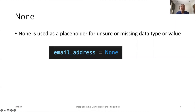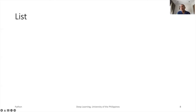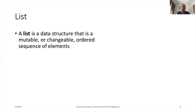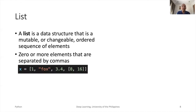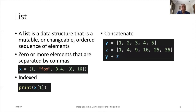None is a special type of variable value used as a placeholder. It could be used if we are unsure of its data type or there is really no value at all but might have a value later. Here is an example where the email address is not known, thus is set to None. One of the basic data structures to contain numbers, strings, and objects is the list. A list is a mutable, ordered sequence of elements.